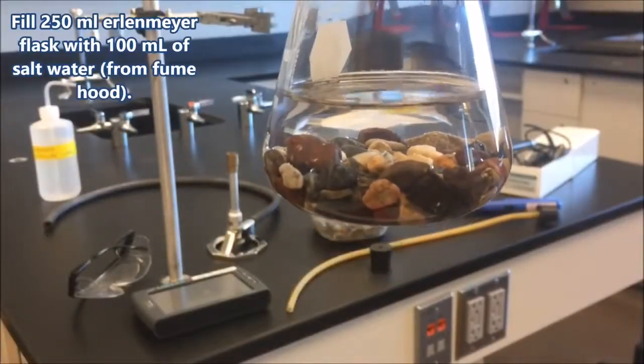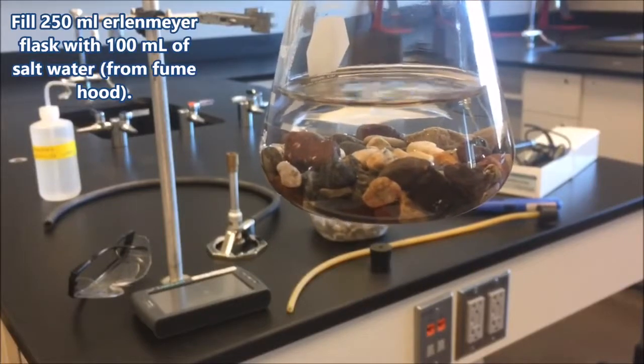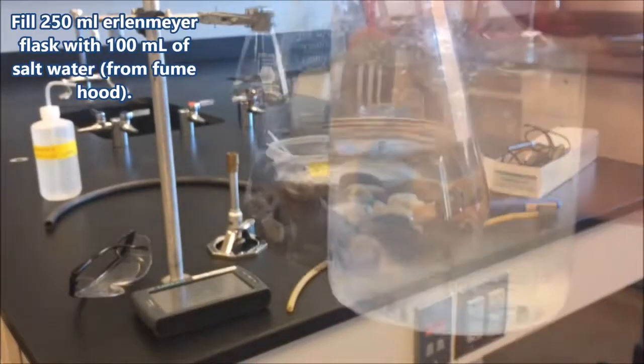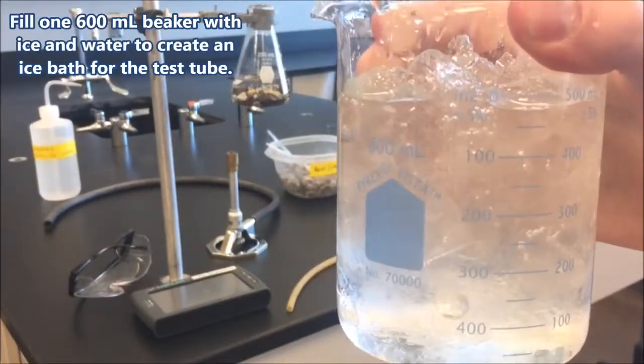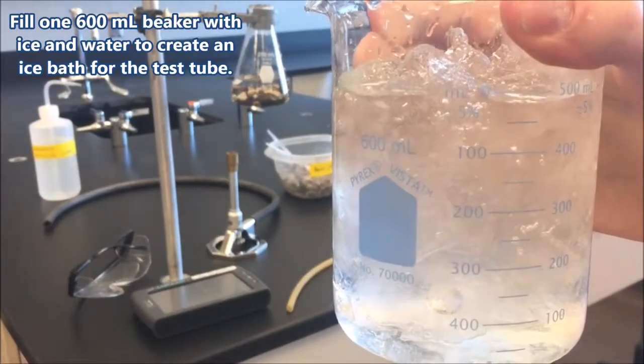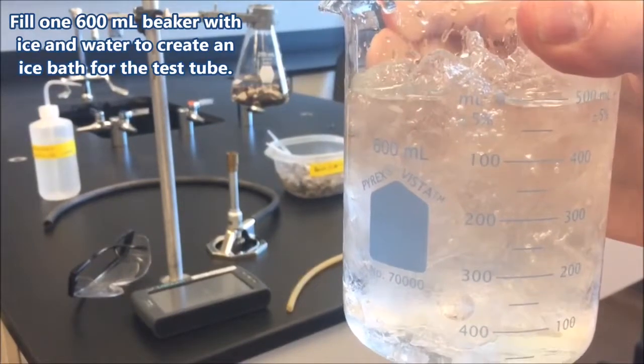And then we want to add about 100 milliliters of salt water from the fume hood in the back. And then you're going to want to fill one of your 600 milliliter beakers with some ice and water to make a nice ice water bath.